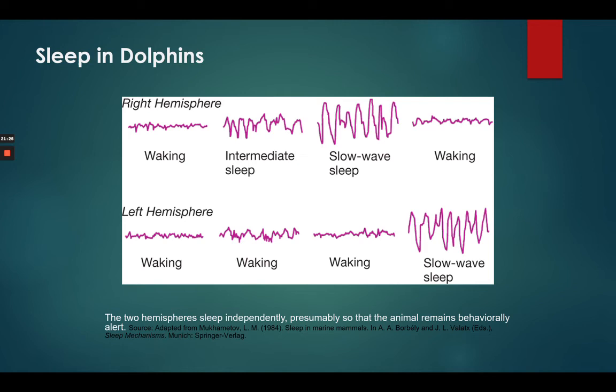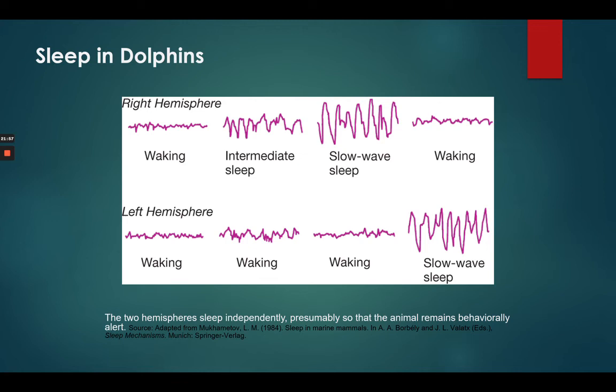An interesting tidbit: dolphins' two brain hemispheres sleep separately. When the right hemisphere is in slow-wave sleep — those calm, synchronous waves — the left side of the brain is awake, and vice versa. This is thought to be an evolutionary adaptation so that dolphins can always remain vigilant, with one part of their brain always awake.